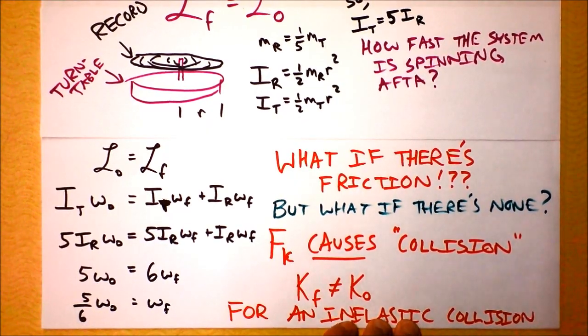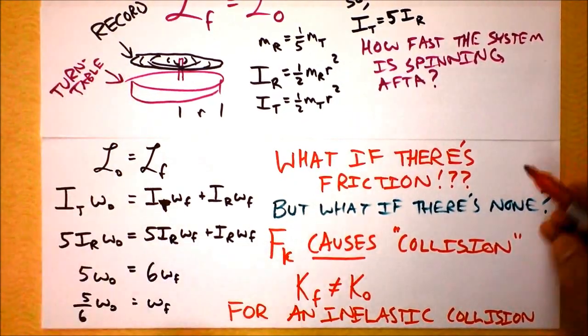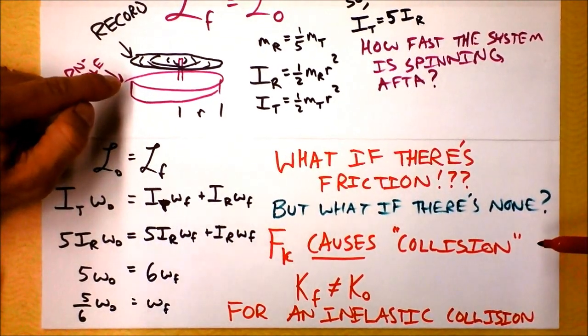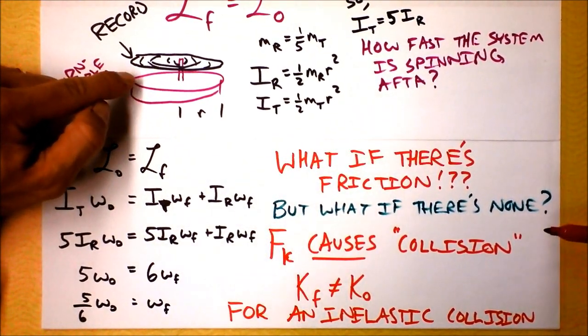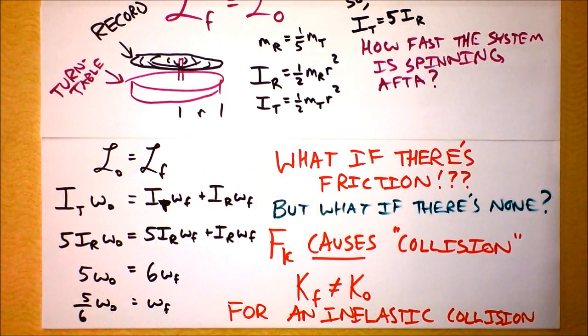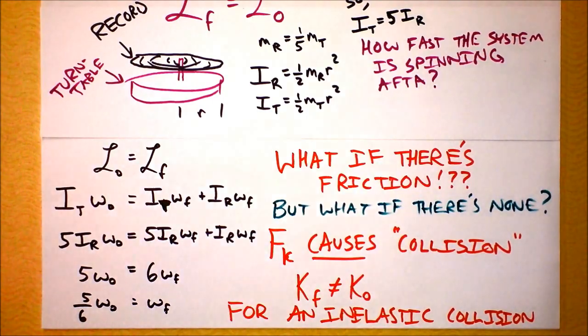And I want to point out that we can actually calculate, if we know the coefficient of friction and we know the normal force on the record, we can calculate how much work friction has actually done. And that should be exactly equal to the loss in kinetic energy of the system when the collision happens. Dang!